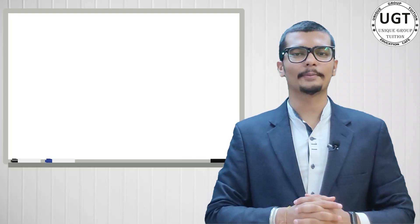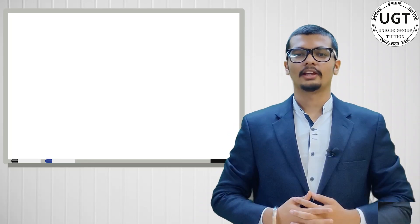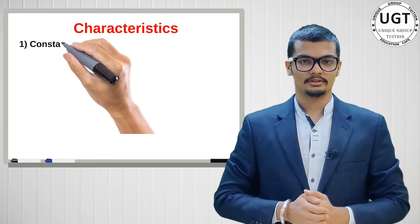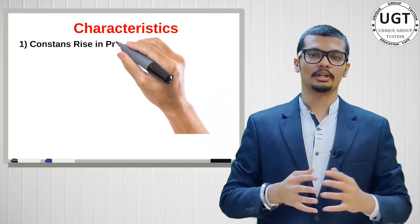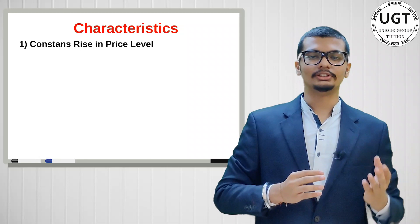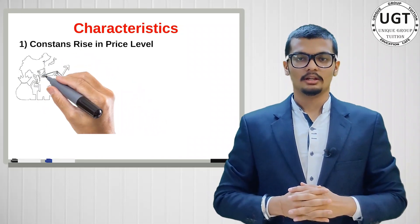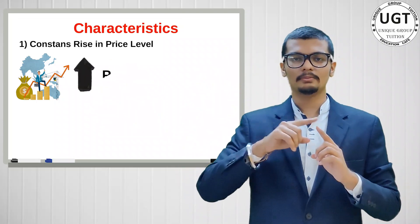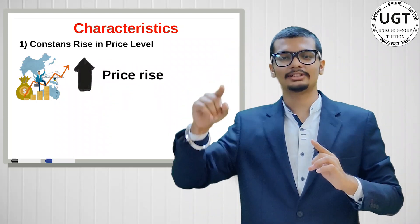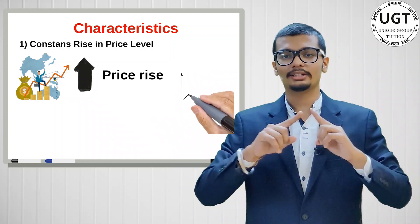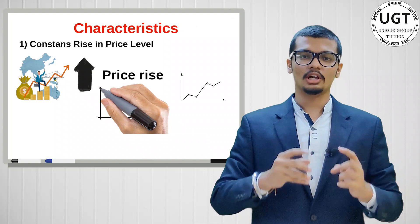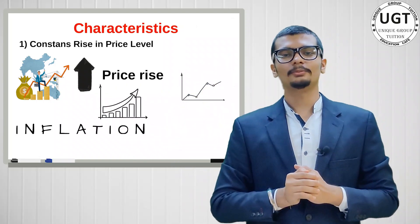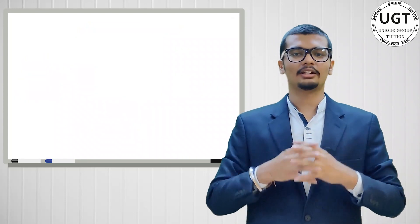Next, characteristics. Characteristic number 1: constant rise in price level. That means if in the economy prices constantly increase, year after year prices rise, then we call it inflation. If one year prices rise and the next year prices fall, then it will not be inflation. When the economy constantly has price rises, that is inflation.